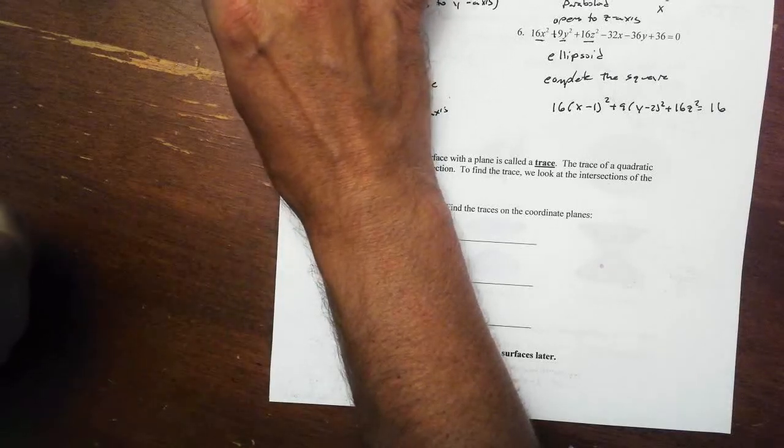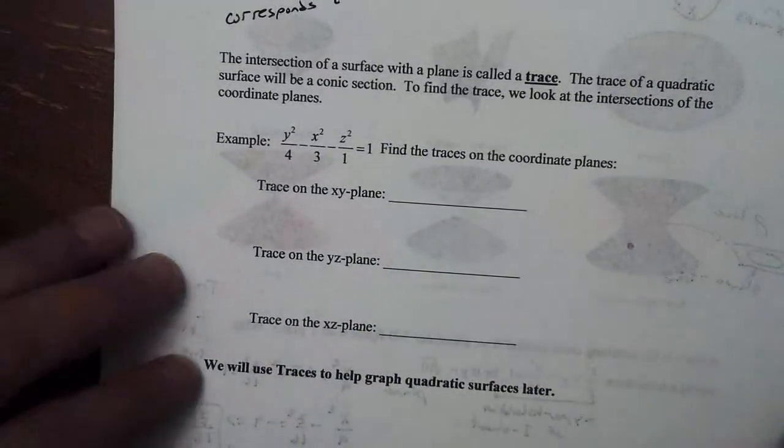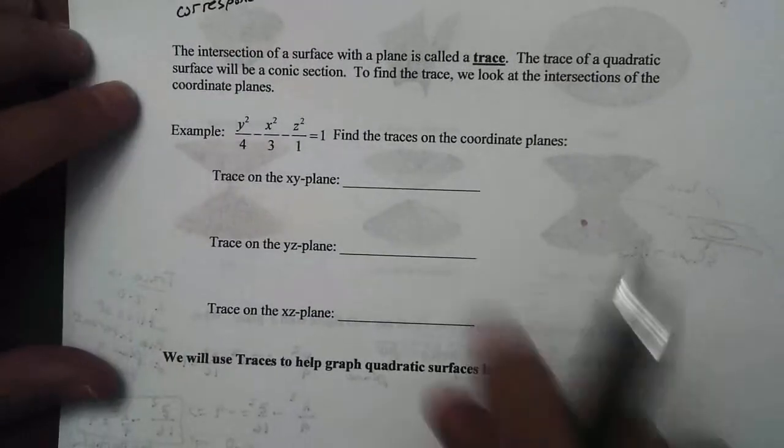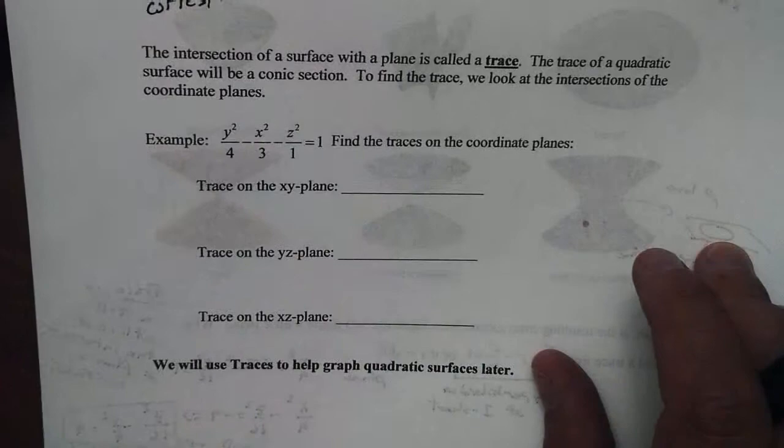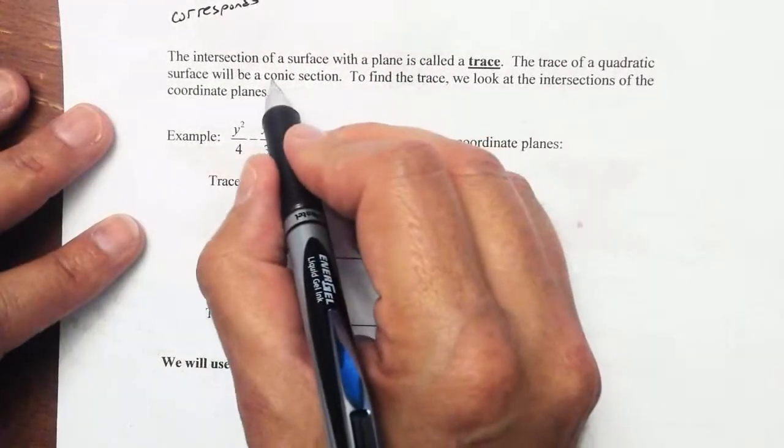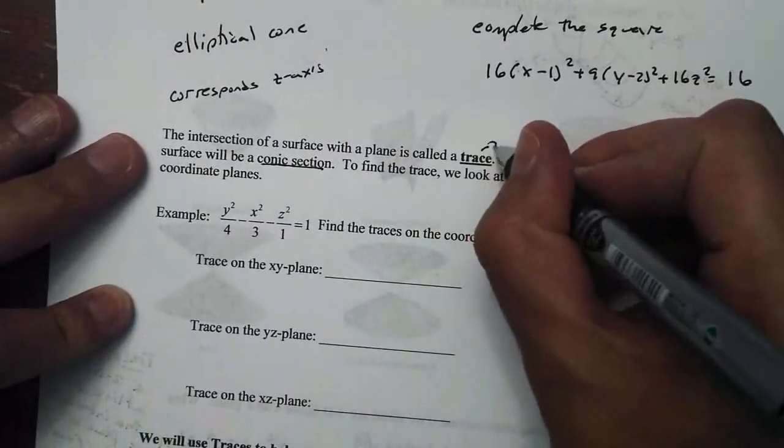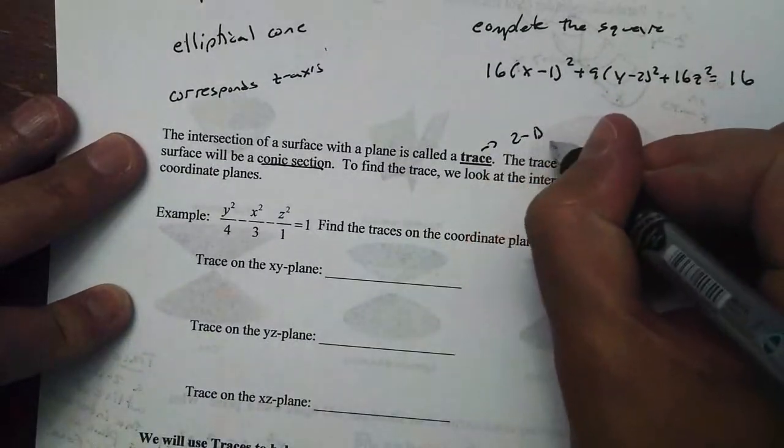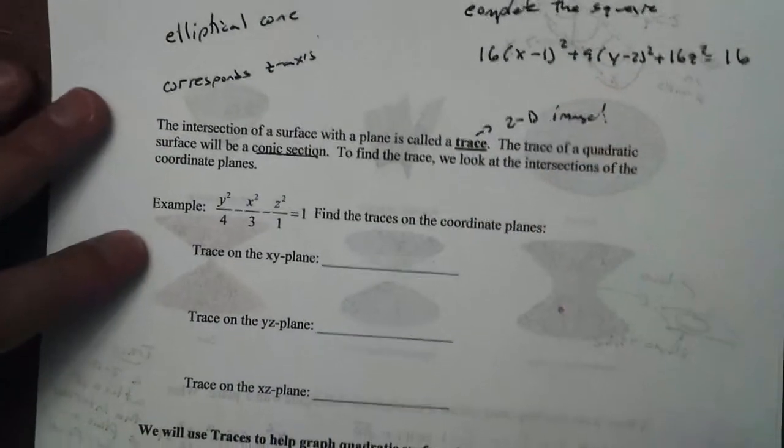Let's go ahead and take a look at part 3 and talk about the traces. Remember, we talked about traces in the last part. The intersection of a surface with a plane is what we call trace. The trace of a quadratic surface will be one of our conic sections, and we should remember those from last year. Remember also that the trace we talked about is a 2D image.